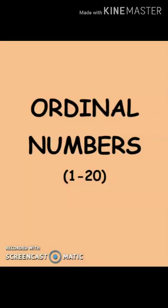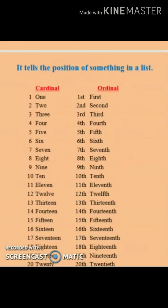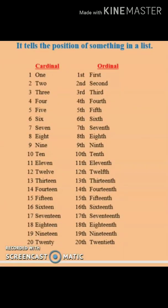Today our topic is ordinal numbers. We are going to cover ordinal numbers up to 20. An ordinal number refers to the position of something in a list. There are two types of numbers: cardinal numbers and ordinal numbers. Cardinal numbers are those which we use in our daily life, like 1, 2, 3, 4 — these are counting numbers.